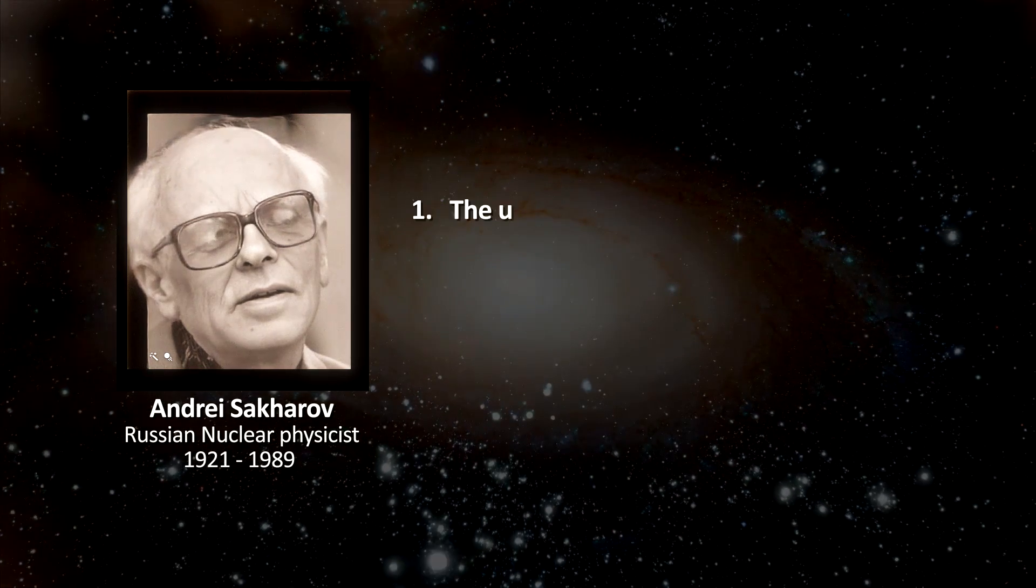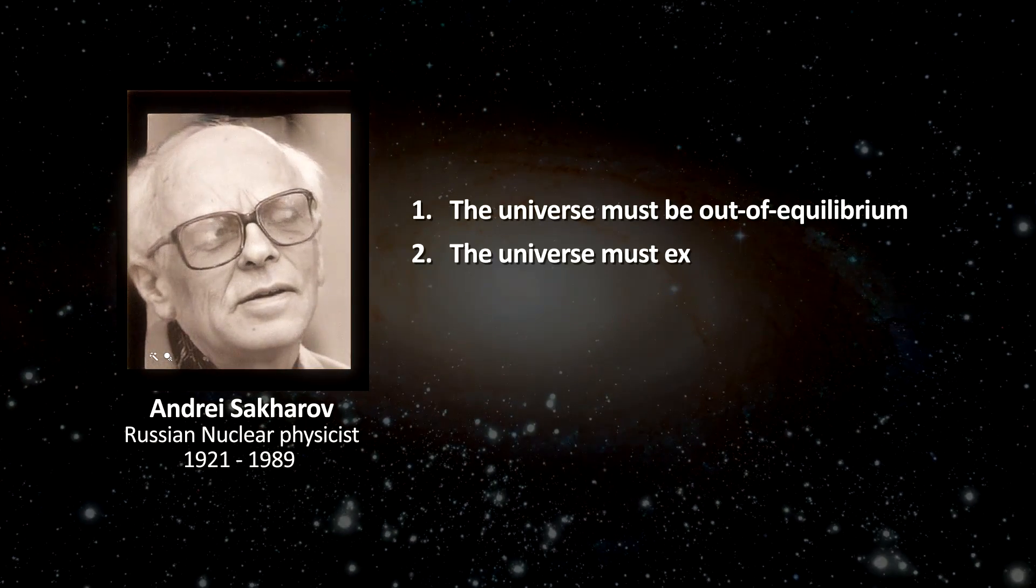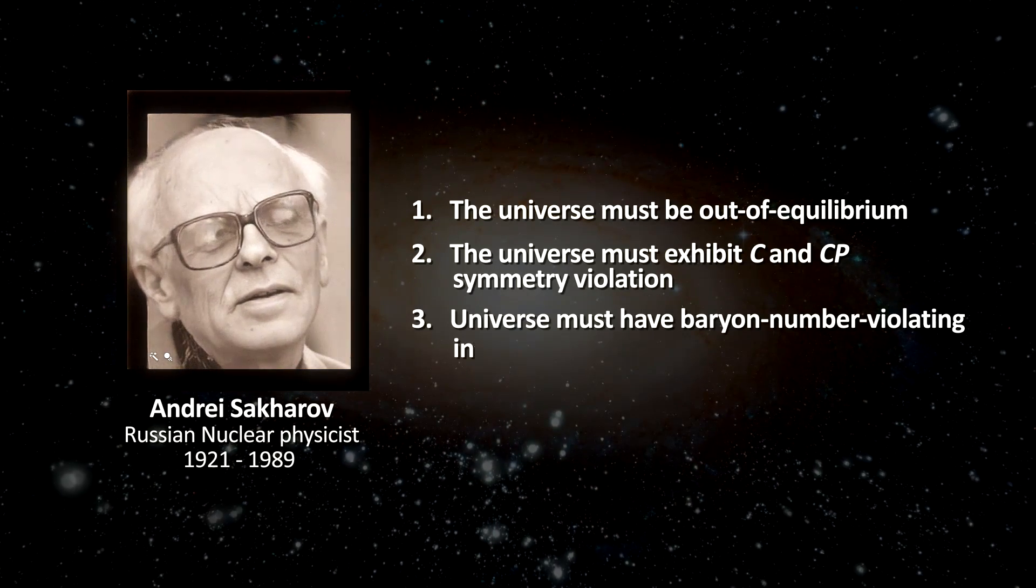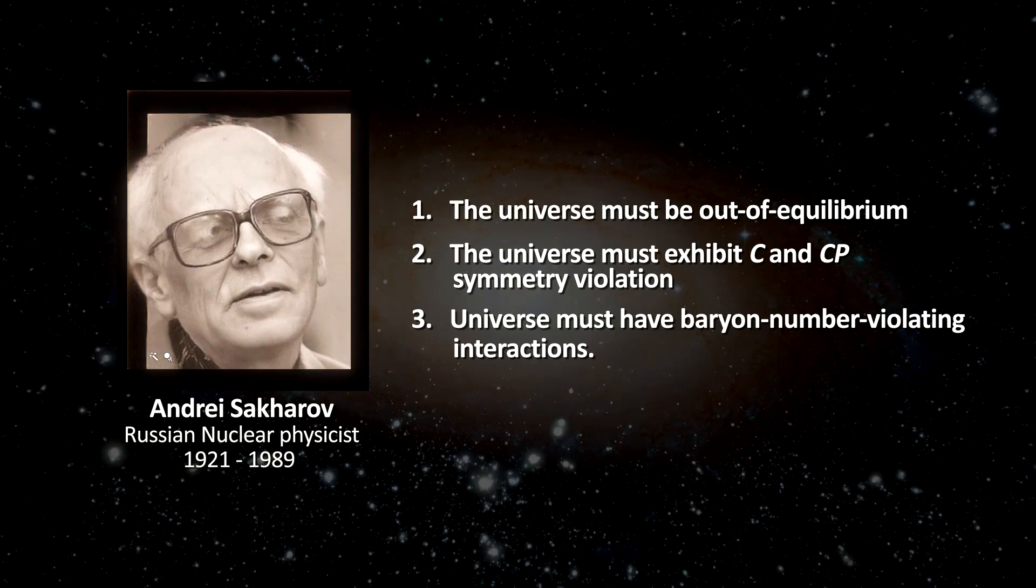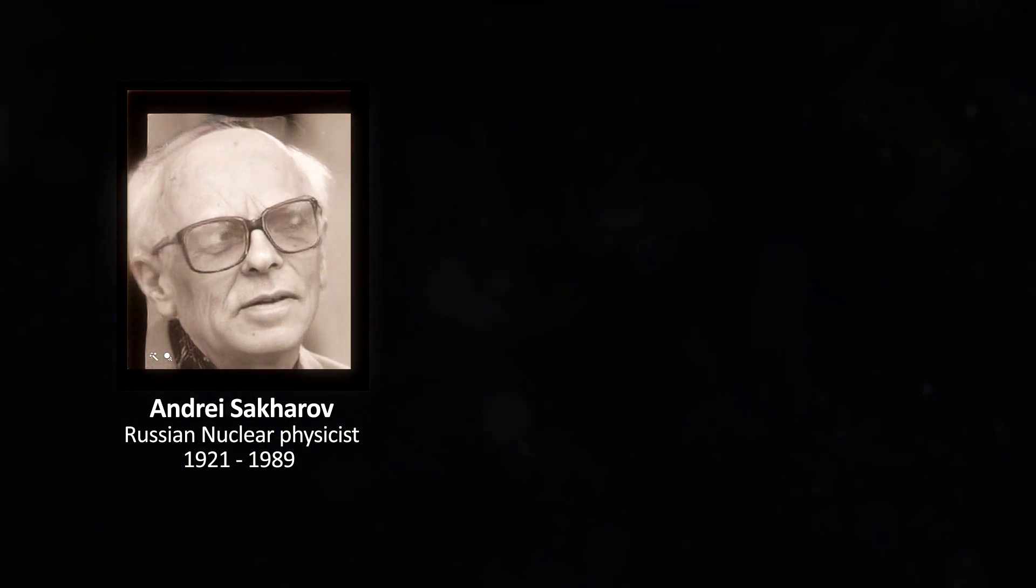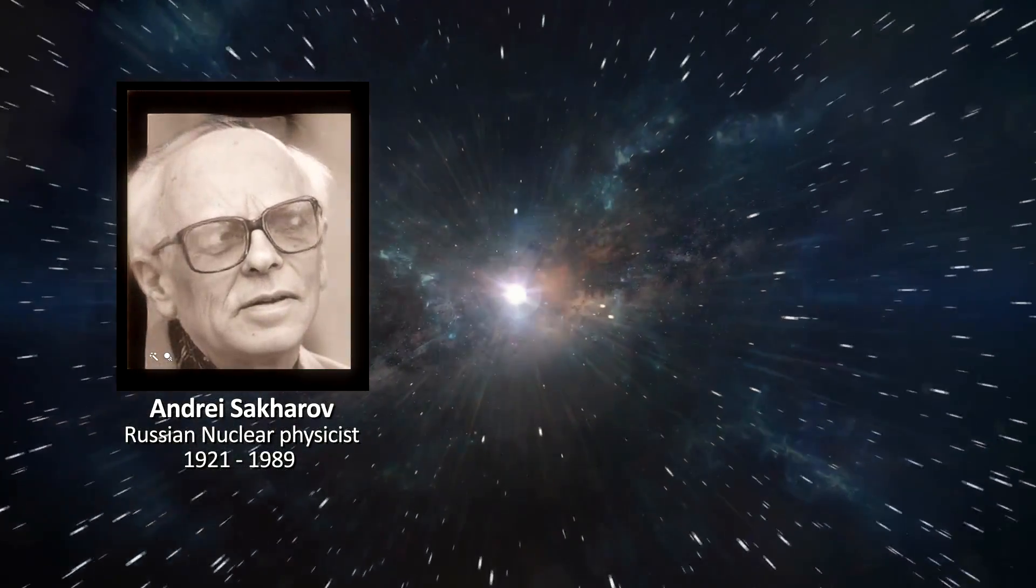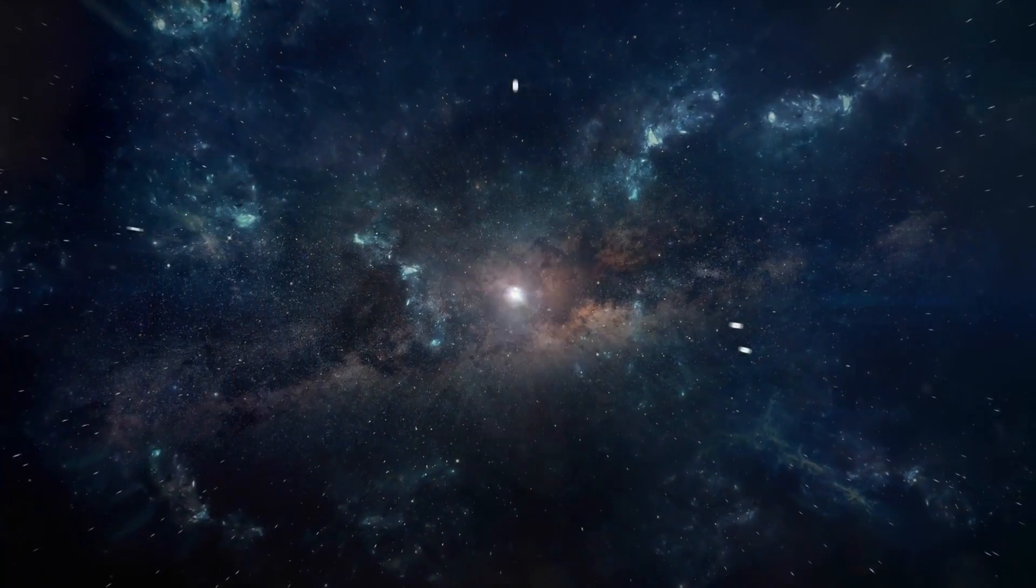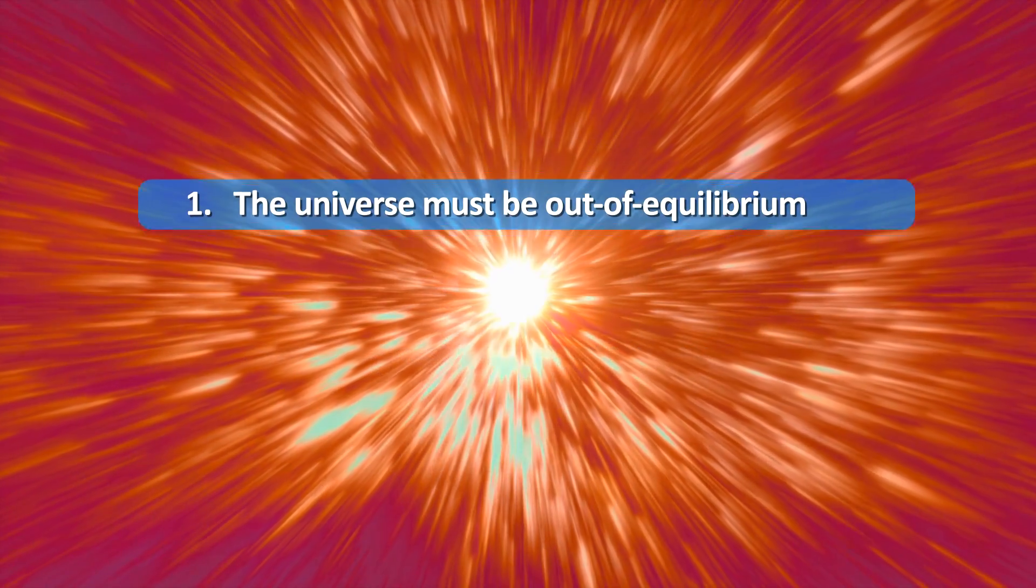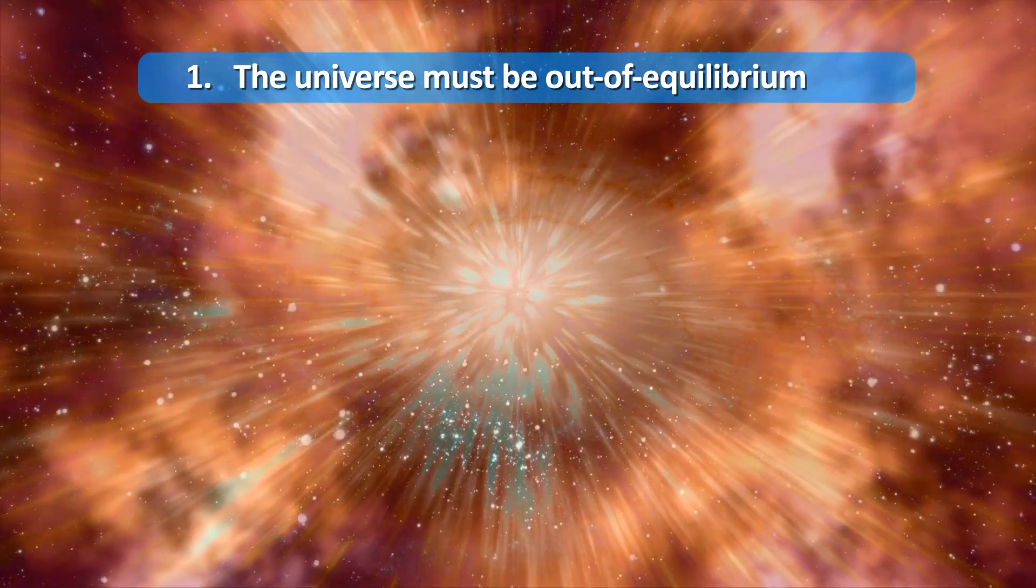These conditions are the following. The universe must be out of equilibrium. The universe must exhibit C and CP violations. The universe must have baryon number violating interactions. Basically, Sakharov proved mathematically that the universe can start with an equal amount of each and end up with more matter than antimatter if these conditions are met. So let's look at what these conditions mean. The first condition is easy to meet, because we live in a universe that is cooling and expanding. It is not in equilibrium.